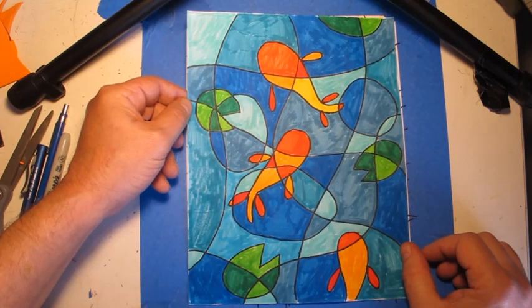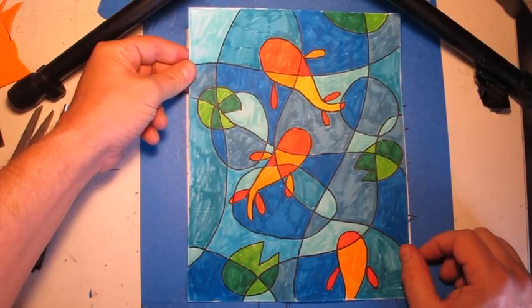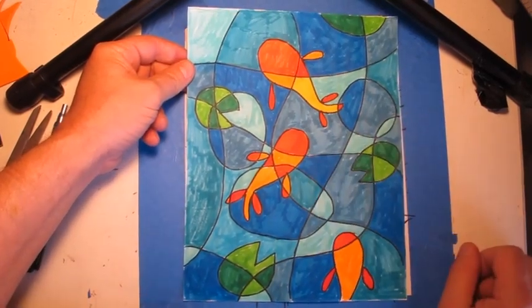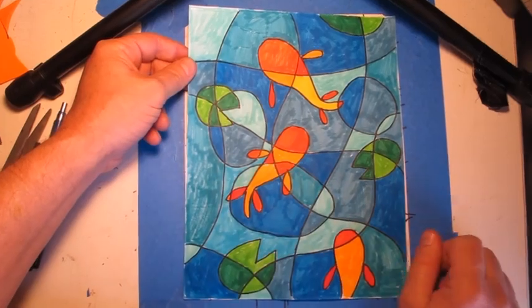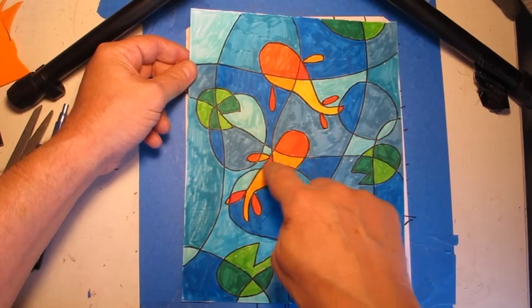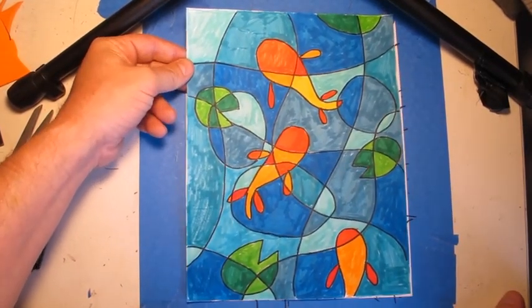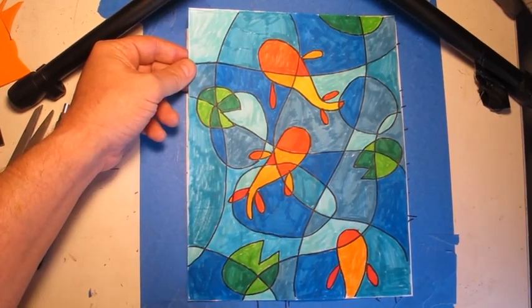So that is about it for the warm and cool koi fish pond. I hope you enjoy making it. Remember at least three fish. Get a few lily pads and just a lot of wavy lines crossing over and everything making these individual spaces. I hope you enjoy making it and I will see you next time.